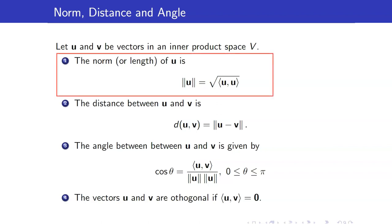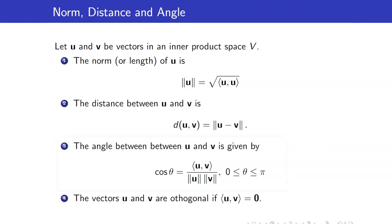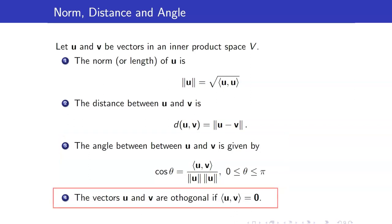The norm or length of a vector u is equal to the square root of the inner product of u with itself. The distance between two vectors u and v is defined to be the length of the difference of the two vectors. The cosine of the angle between u and v is given by the inner product of u and v, all over the product of the norms of the two vectors. The vectors u and v are orthogonal if and only if their inner product is equal to 0.